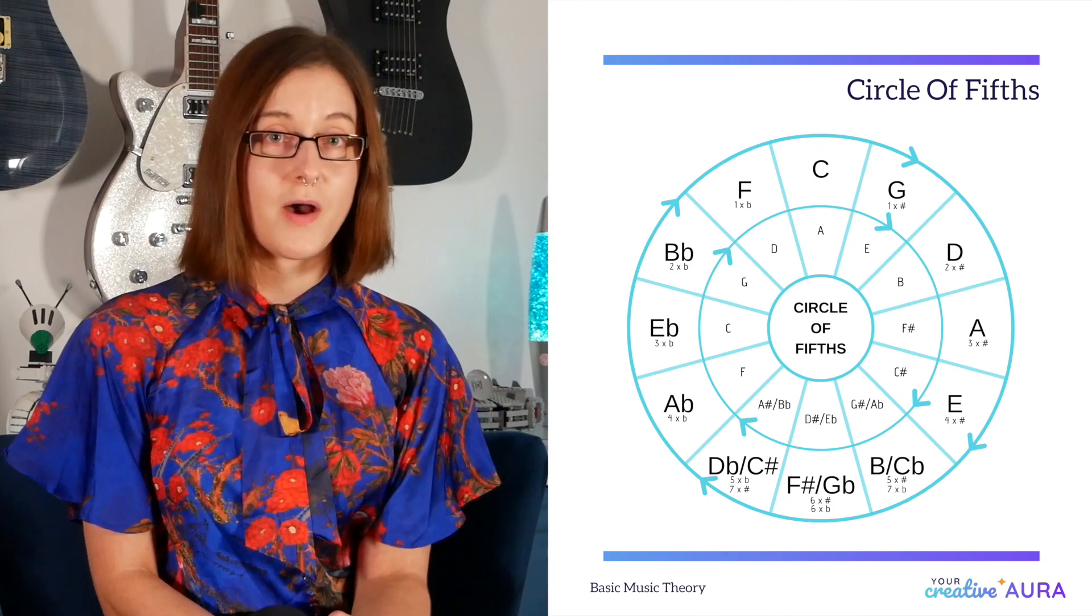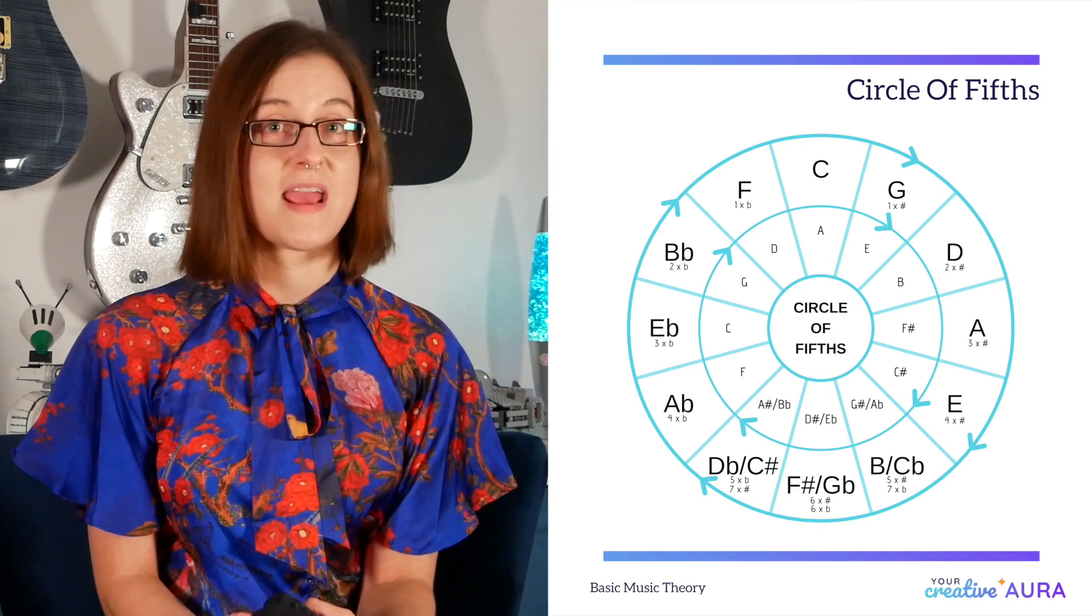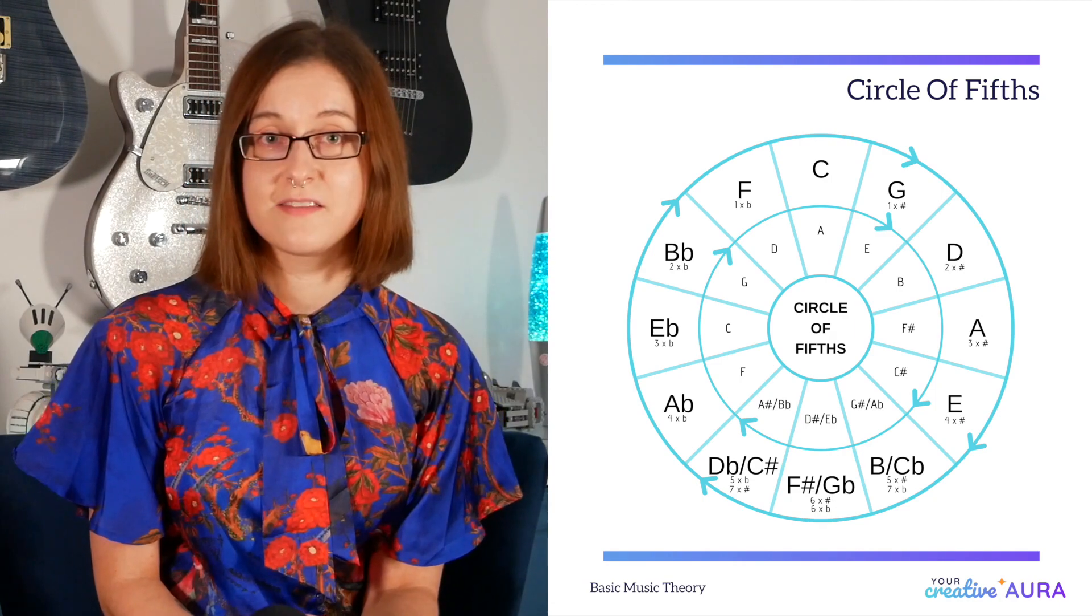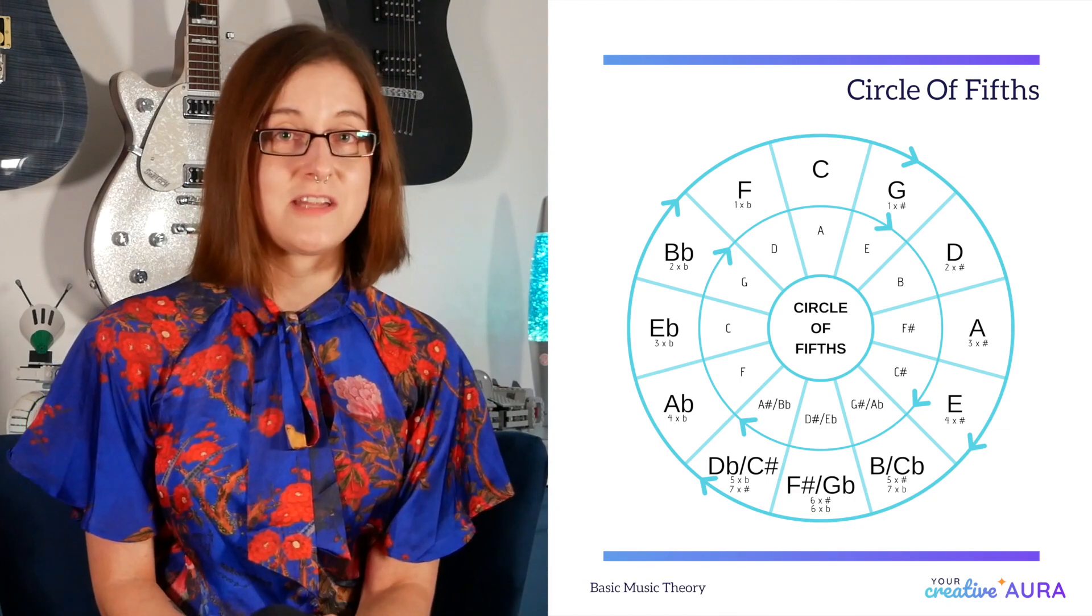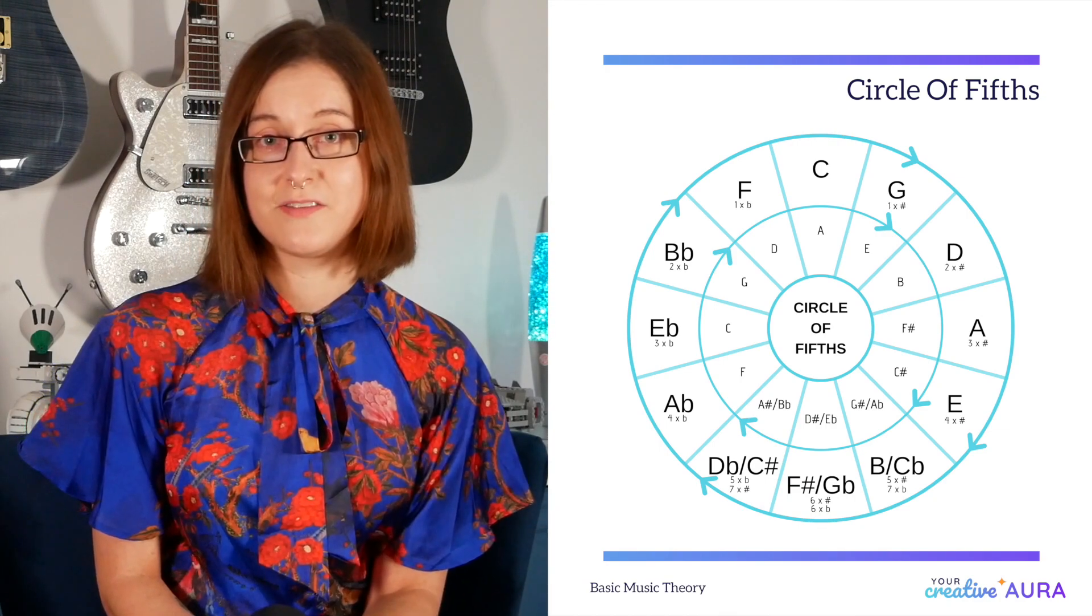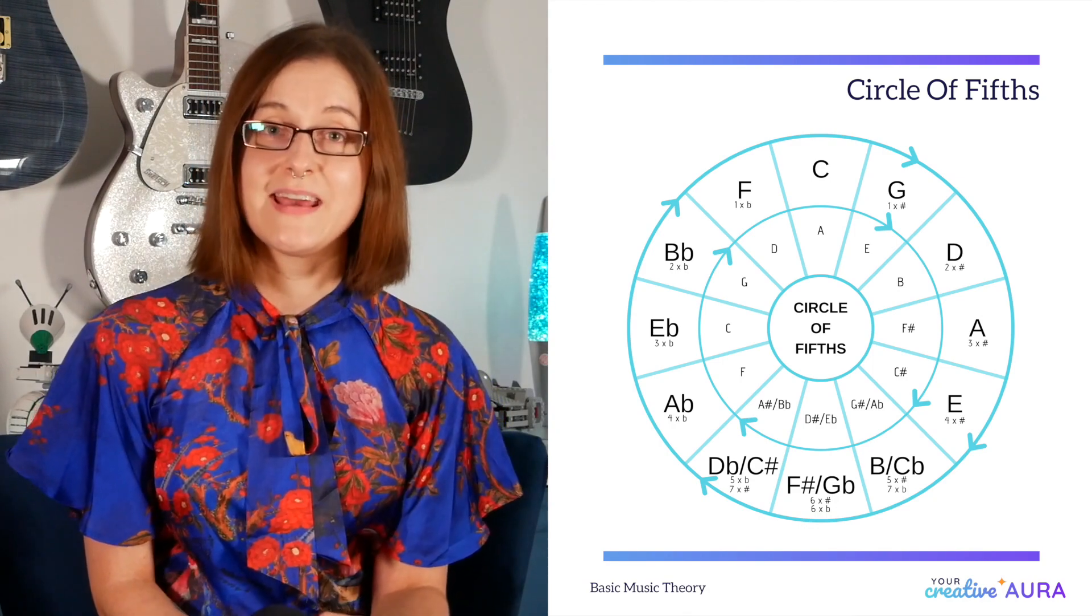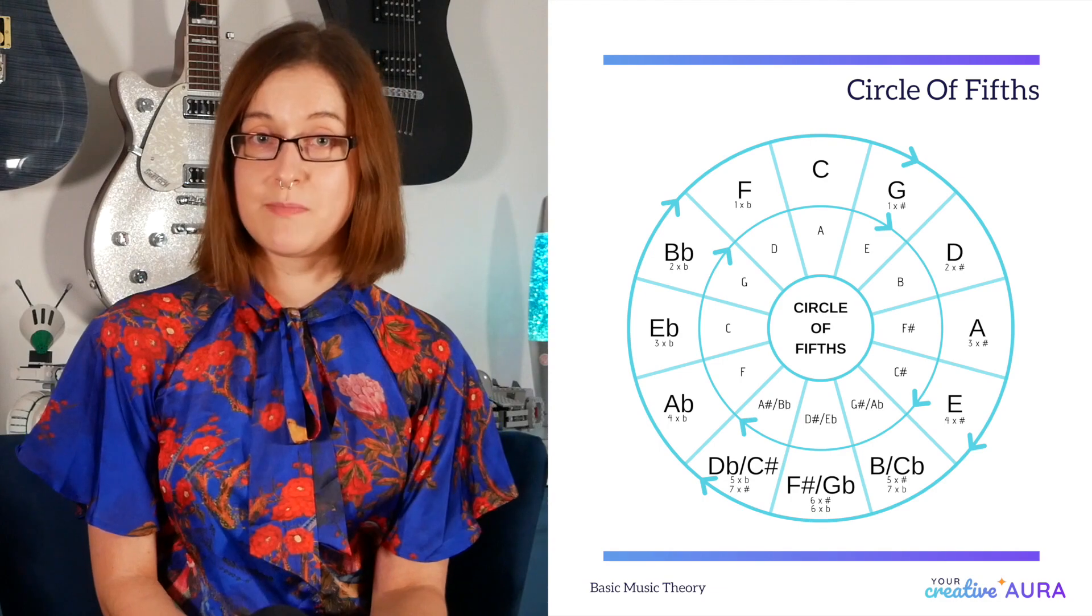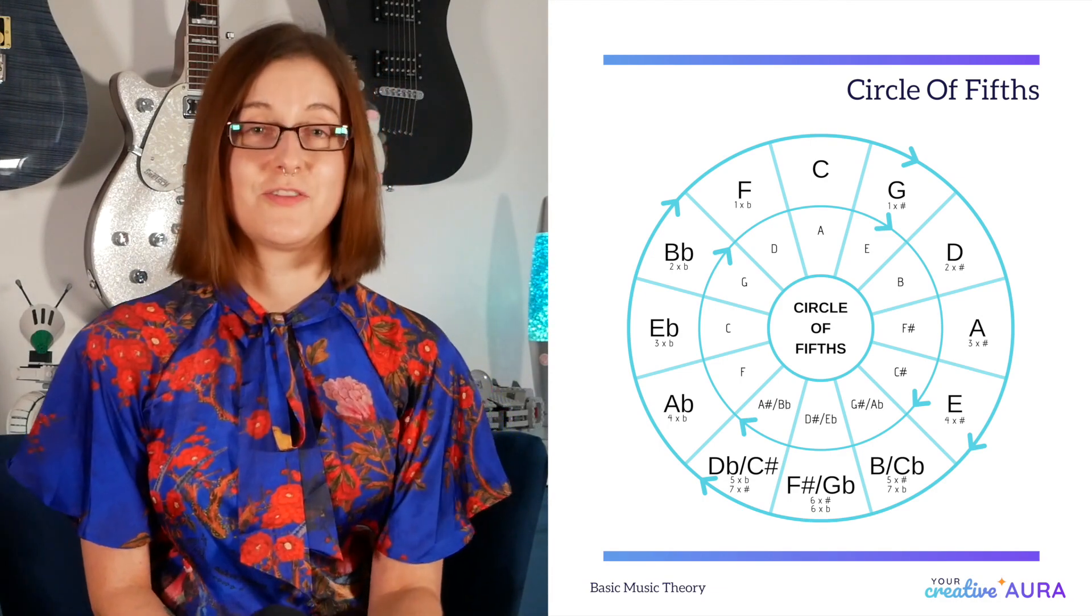Until we reach the bottom where our enharmonic keys come in, which can be phrased as sharp or flats. On the inner ring are our major key's relative minors. So C major at the top, its relative minor is A. G major, its relative minor is E, and so on.